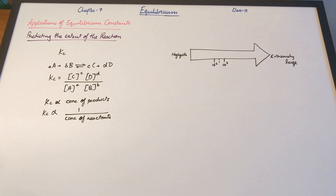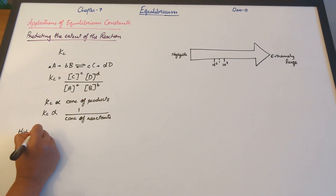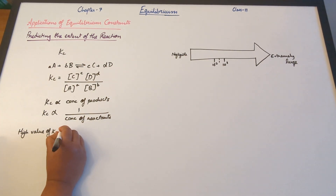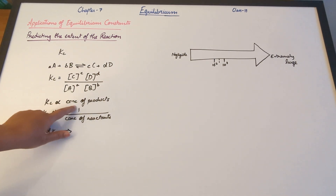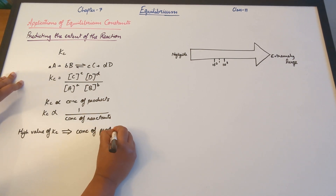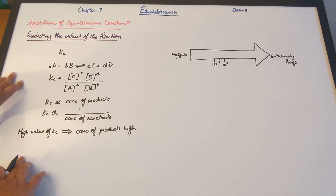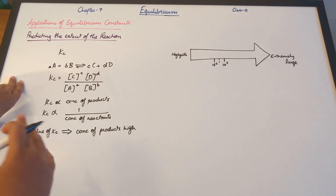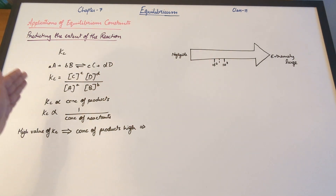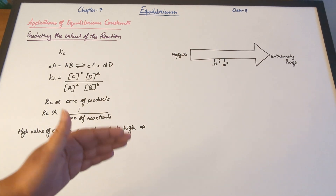So you have two cases. Case one: high value of Kc. When it's high, this implies concentration of products is high. Now this implies that in our reaction A plus B giving rise to C plus D, a lot of C plus D formed, and that means the reaction proceeded to a greater extent.